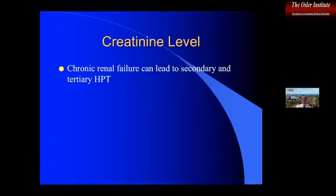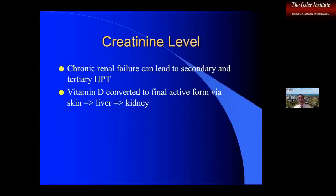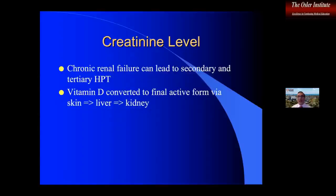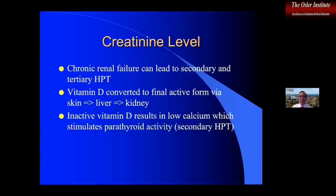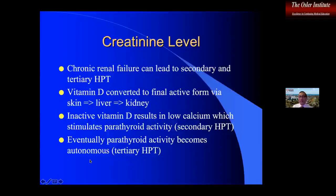Creatinine levels are important. Chronic renal failure can lead to secondary and tertiary hyperparathyroidism because vitamin D, which normally controls calcium levels, is converted at three levels: skin, liver, and kidney — and its final conversion is in the kidney. If you have renal failure, the kidney does not make the final conversion of vitamin D. That lack of active vitamin D leads to a drop in calcium, which then increases parathyroid hormone activity to drive calcium back up, and you subsequently develop independent parathyroid activity — referred to as tertiary hyperparathyroidism.